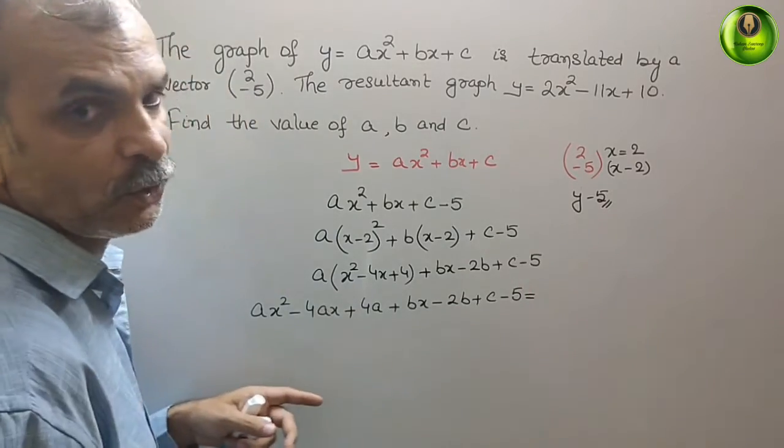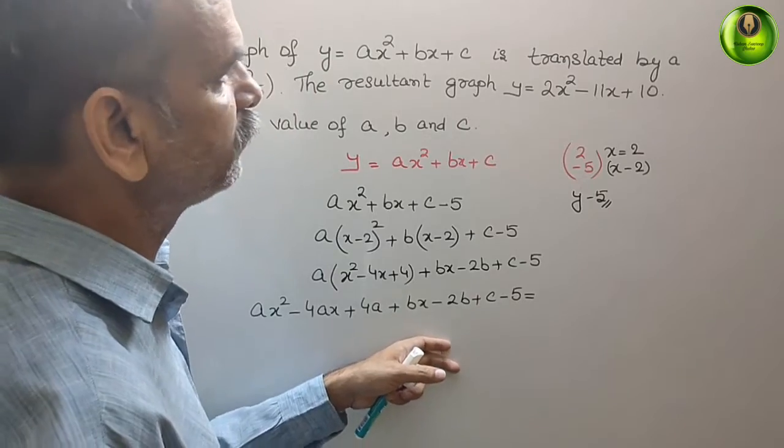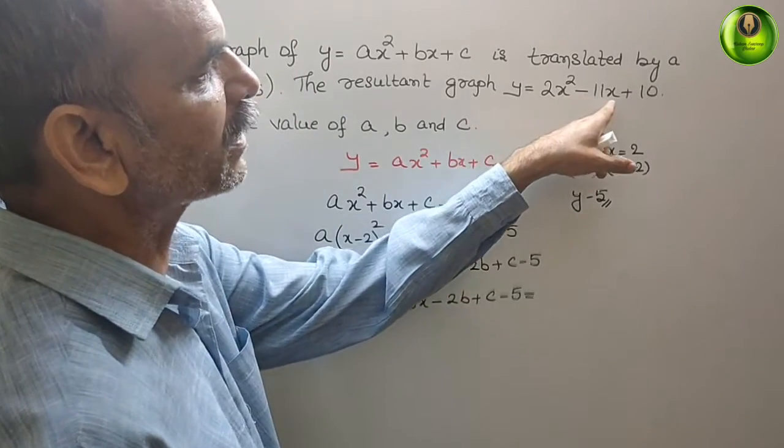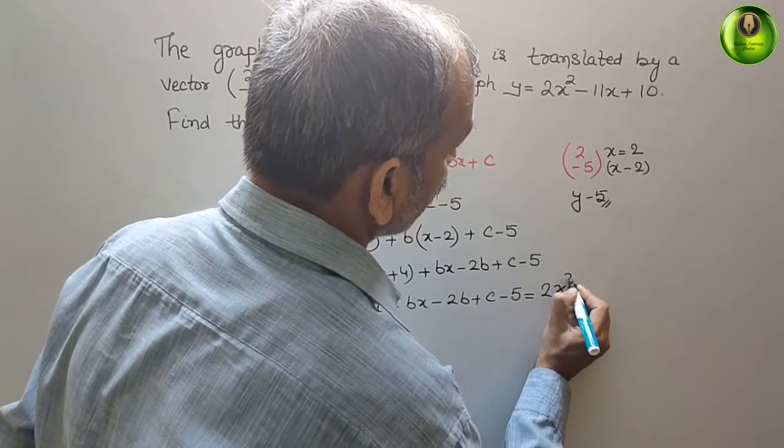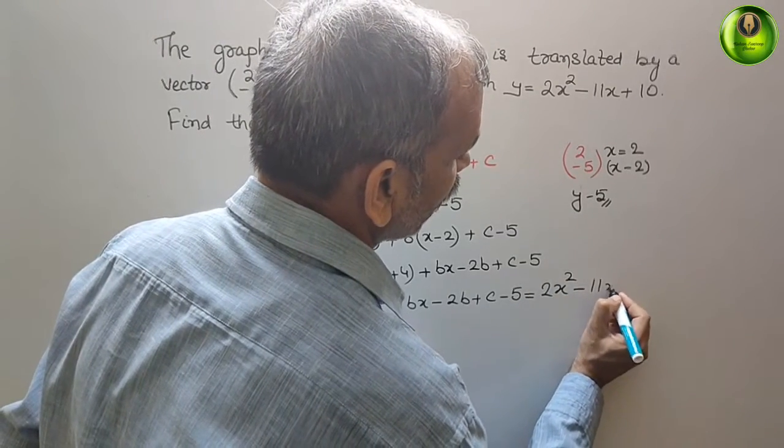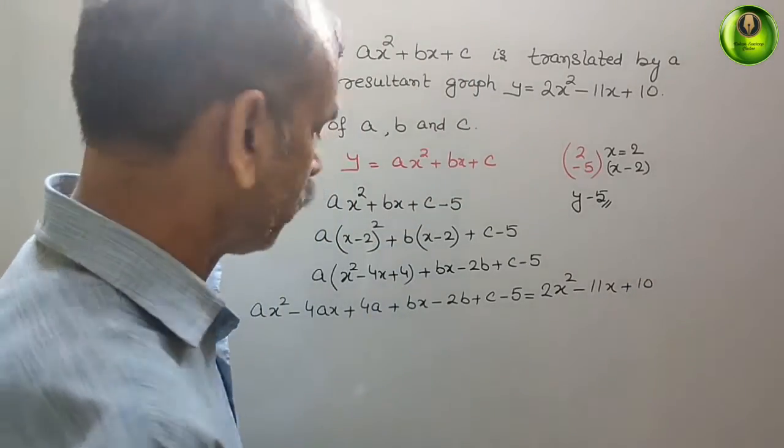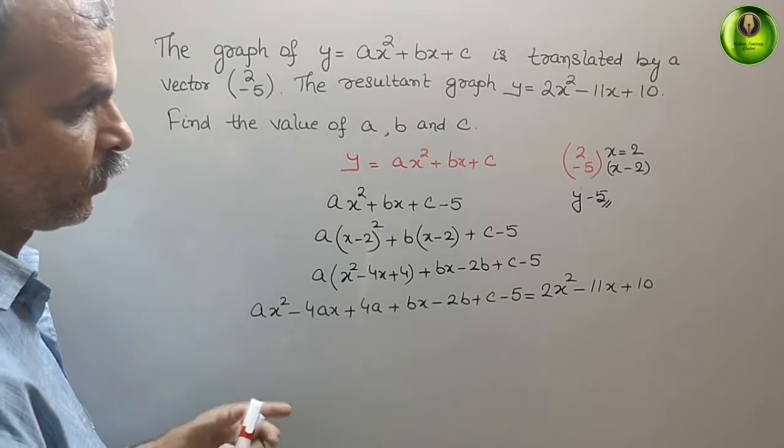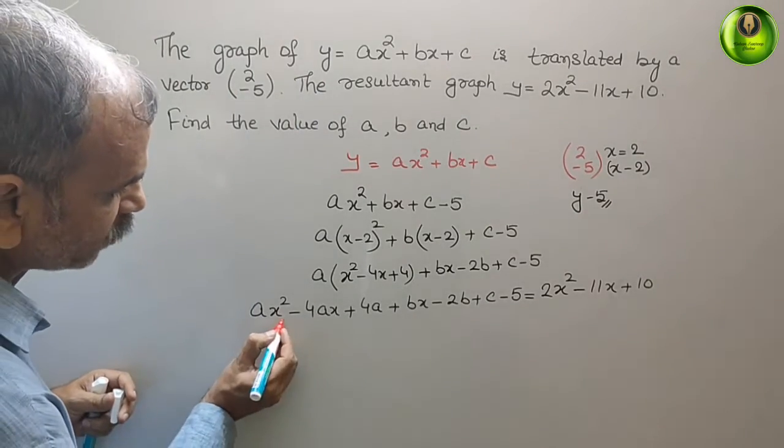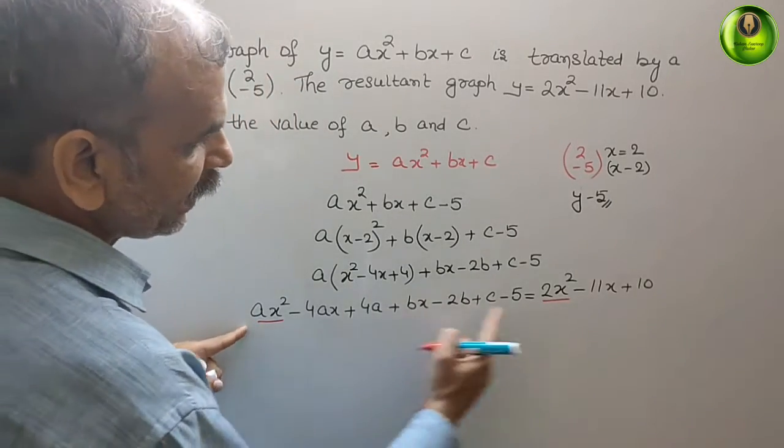That is equal to—they have given this equation as what? 2x² minus 11x plus 10. Now if you see here, just compare it: ax² means a is 2.